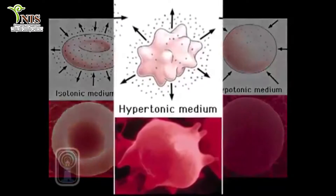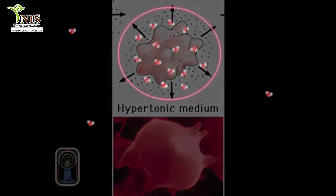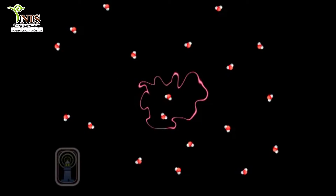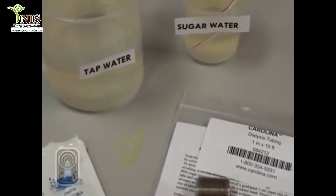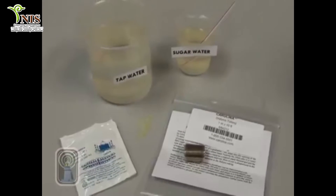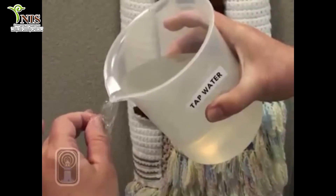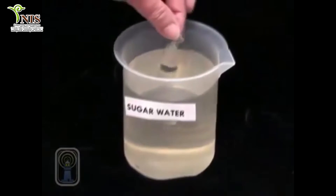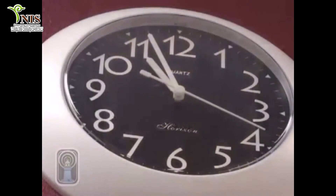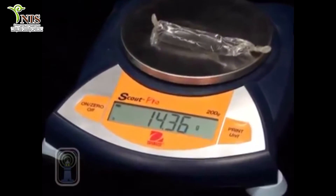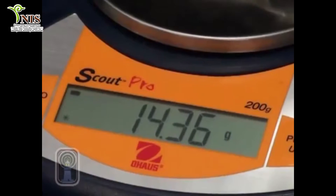If a solution is hypertonic, there is a greater concentration of solute outside the cell than inside, so water leaves the cell and the cell shrinks. In this demonstration, a dialysis tubing cell was filled with tap water and placed in a beaker of concentrated sugar solution. After approximately 30 minutes, the cell was removed and weighed — it had lost a significant amount of weight and became very flaccid. When a cell shrinks, it is said to be crenated.